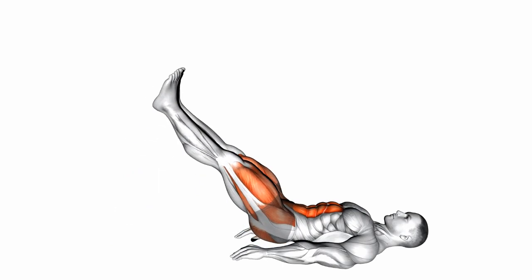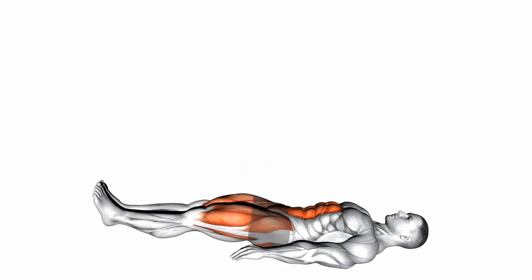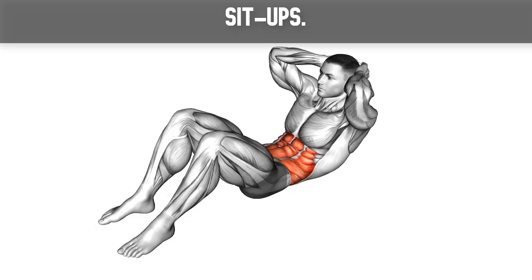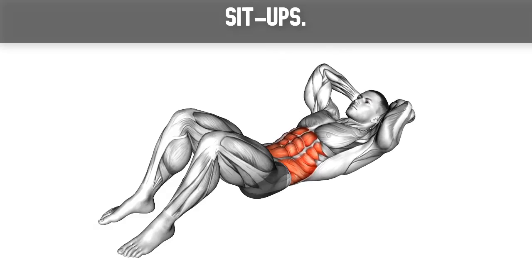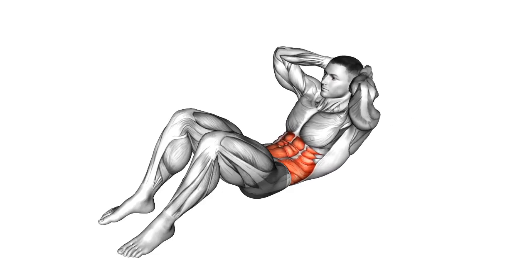Lying Straight Leg Raise: This exercise involves lying flat on your back and lifting both legs up towards the ceiling while keeping them straight. This movement targets the lower abdominals and can help improve core strength and stability.